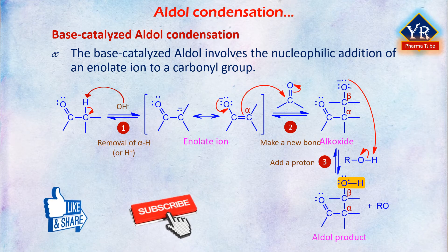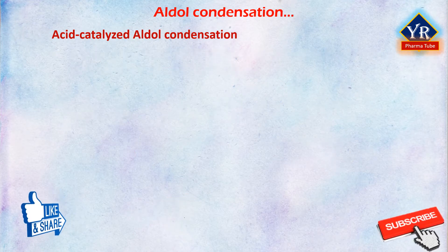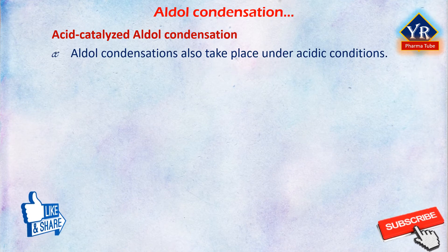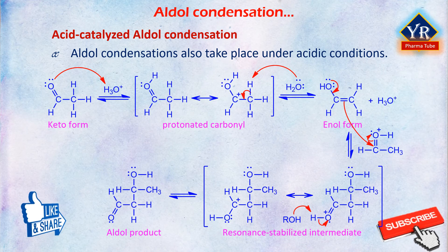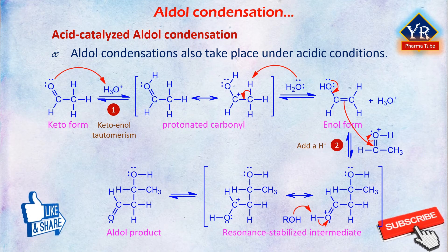Acid-catalyzed aldol condensations also take place under acidic conditions. The mechanism of an acid-catalyzed aldol condensation involves four steps. The first step is keto-enol tautomerism: the keto and enol forms of the aldehyde or ketone undergo acid-catalyzed equilibration. The second step is proton transfer from the acid (HA) to the carbonyl oxygen of the second molecule of aldehyde or ketone, giving an oxonium ion.